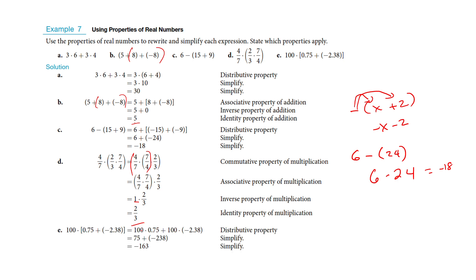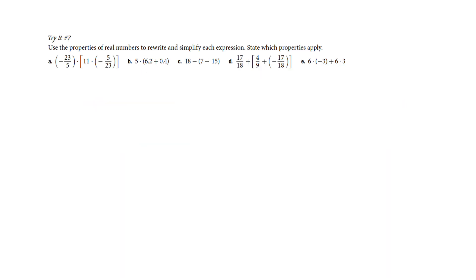This last one is a pure distributive property — you could have done everything inside first and it would still work. But here, if I've got 100 outside, I can distribute it to both of those. Now I've taken away the decimals, which makes putting these together much easier. It isn't super important to memorize every single property name. If you're going on to be a math major or a calculus person, knowing all the property names could be valuable, but I just want you to see the intrinsic value of changing the grouping.